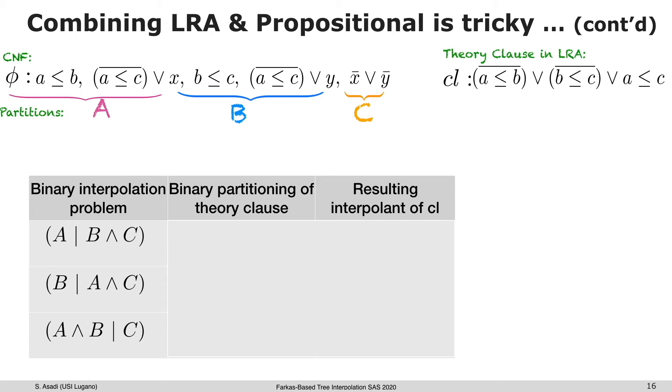Consider formula phi which is partitioned into A, B, C. Before we compute an interpolant for three binary partitioning of the theory clause, we must label the atoms of the theory clause according to the partitions of the CNF formula. The first two atoms in the theory clause are pretty clear and we know that they are labeled as A and B. But for the last atom, there is freedom in how to label that.